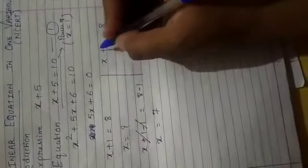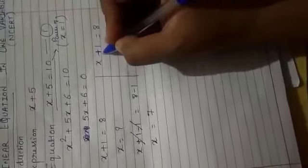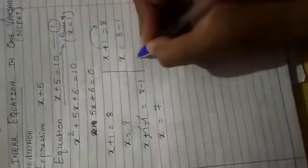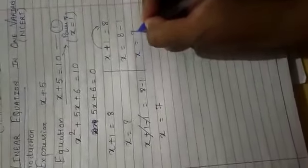One method is x plus 1 equal to 8, transpose method. This is the 7th standard transpose method, which value is on one side, plus goes to the other side and becomes minus. 8 minus 1, so x is equal to 7.